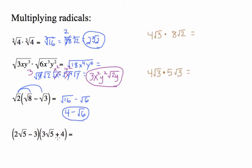Pause the video and write down these two problems. When multiplying 4 root 3 times 8 root 2, combine the regular numbers and the roots separately: 4 times 8 is 32, and root 3 times root 2 is root 6. The answer is 32 root 6, which cannot simplify further.